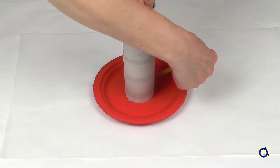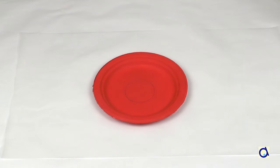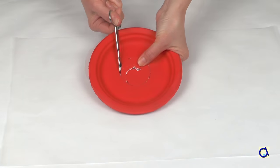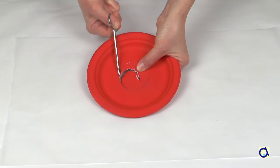Take the tube from which you cut a piece and place it in the centre of the second plate, the one without candle holder. Trace around the tube and cut out the circle.